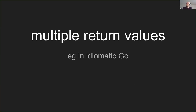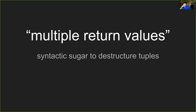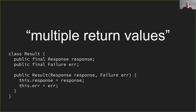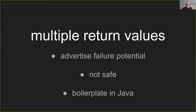One thing we could do is multiple return values, such as is used in Go. This is typical error handling in Go where an etFoneHome function returns both a response and an error code - if there's an error code you handle the error, if there's no error code it's a good response. This is all fancy words around returning tuples or a compound value, which we could do in Java. But whilst it conveys to the user that there is potential for failure, it's not safe - you can use the success value and just ignore the error, and it's heavily boilerplate-y in Java.